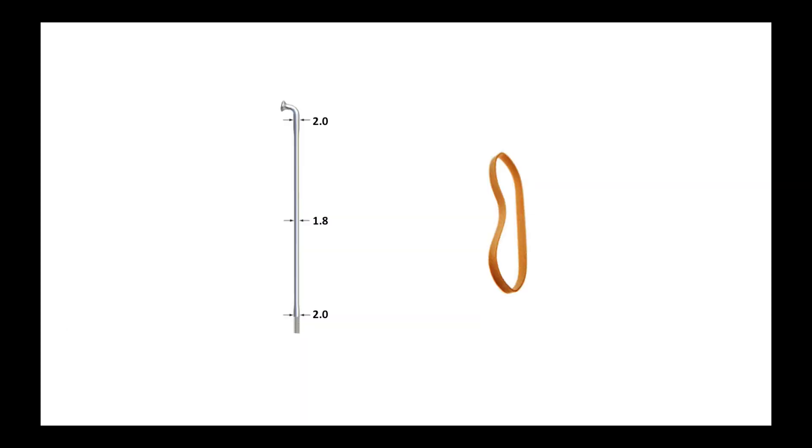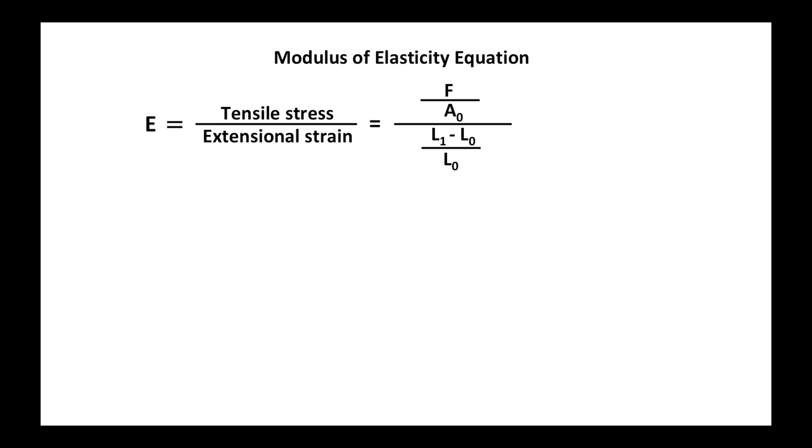Now spokes are elastic in a bicycle wheel. This is the modulus of elasticity equation. The modulus E is defined as the tensile stress divided by the extensional strain. And over on the right there we have in the numerator force divided by the beginning cross-sectional area in the numerator and the denominator is the stretched length after the load is put on it minus the starting length divided by the starting length.